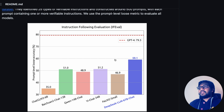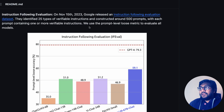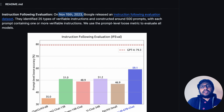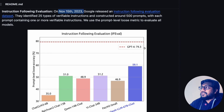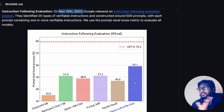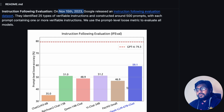There is another benchmark called IFEval — Instruction Following Eval — released by Google on November 15. Because this dataset is released very recently, you can kind of trust it more than existing benchmarks like MMLU. GPT-4 scored 79.3 on this, and DeepSeek LLM chat version 67 billion parameter scored 59, which is again one of the best results, even beating the PaLM 2 small-size models.